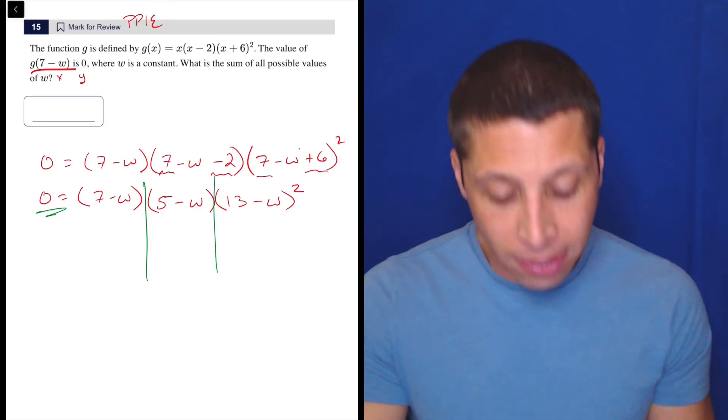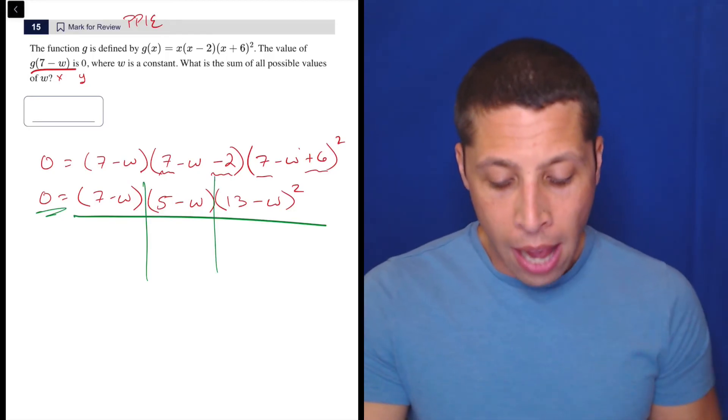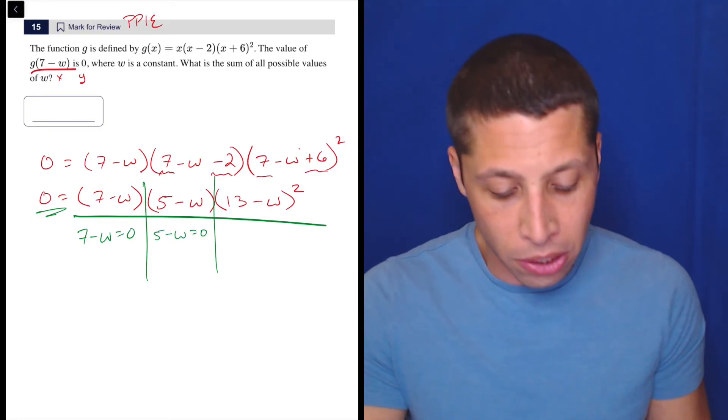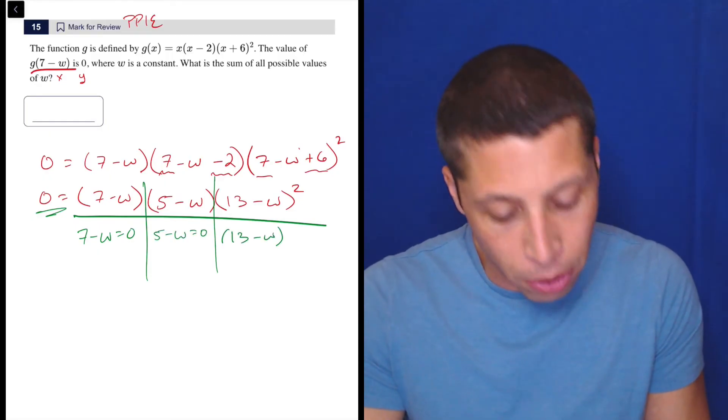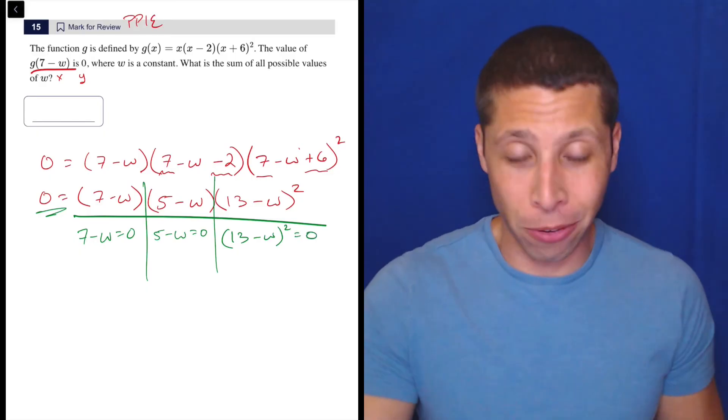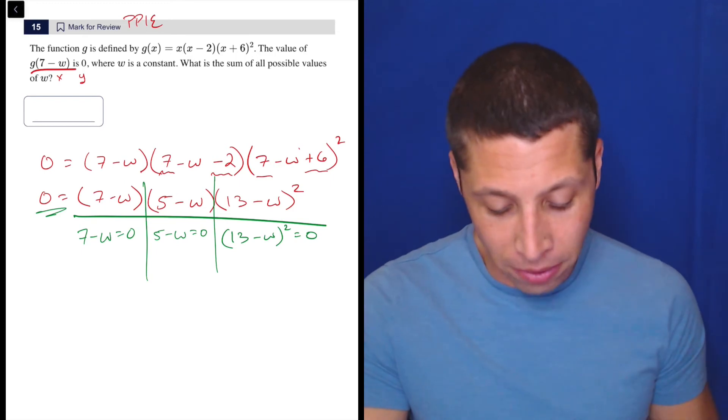So in reality, I'm kind of seeing three separate equations here. I'm seeing 7 minus w equals 0, I'm seeing 5 minus w equals 0, and 13 minus w squared equals 0. But the square isn't going to matter because I'm in factored form, so you're never going to foil this out here. This is not part of the thing.